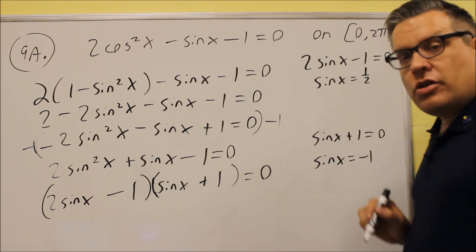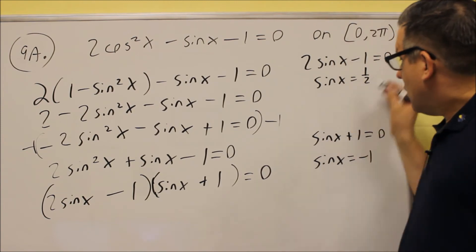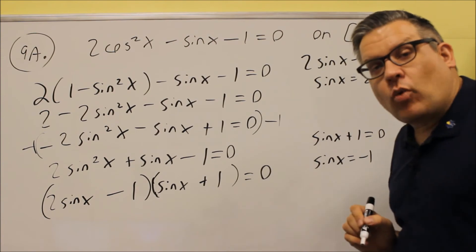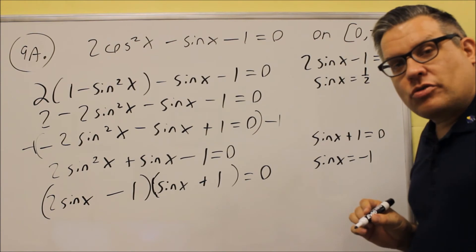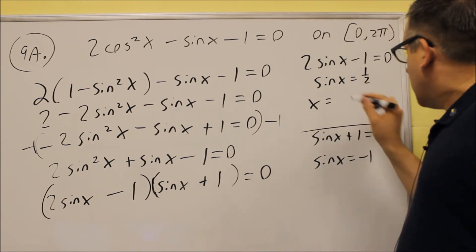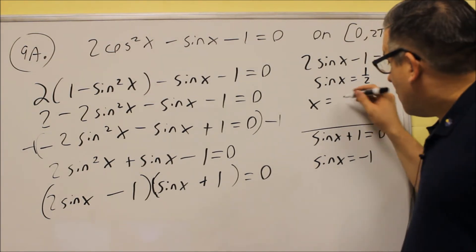The last thing we do is look at the unit circle and find any angle in radians where we get a value of 1 half. Now sine is referring to a y-value off the unit circle, so we want to find any place where there's a y-value equal to a half and write those angles down. So for this first one here, we're going to get our 30-degree angle. That's going to be pi over 6.